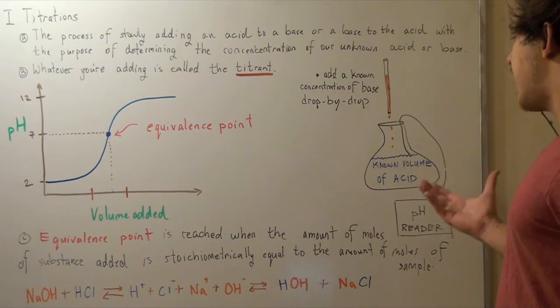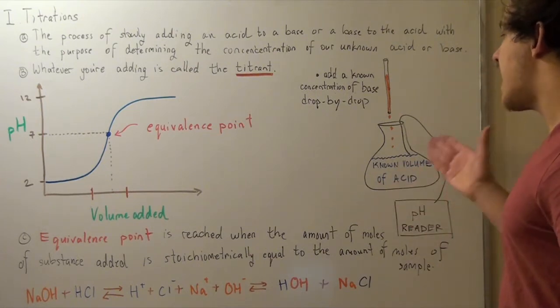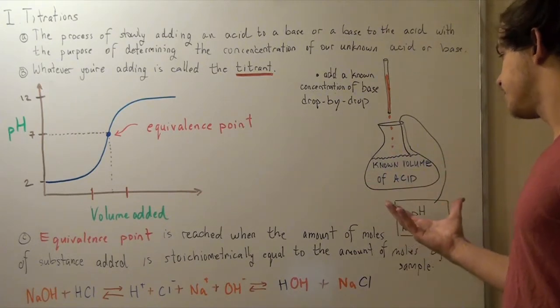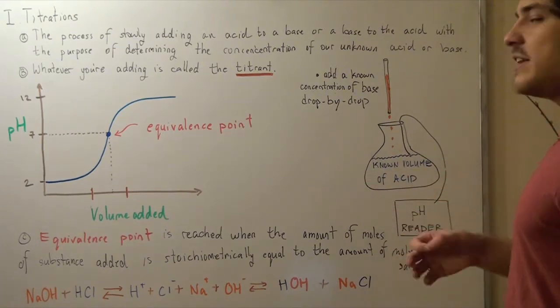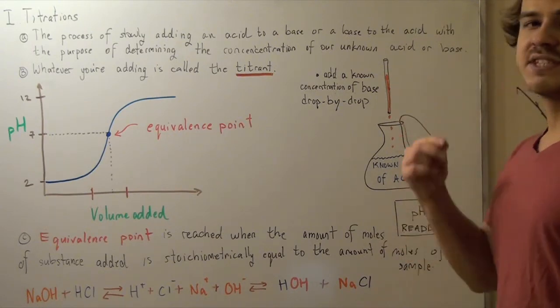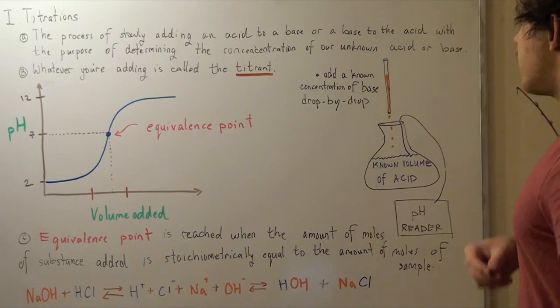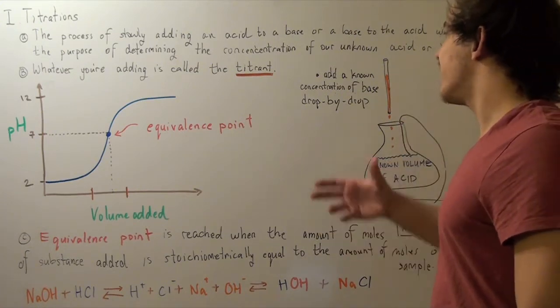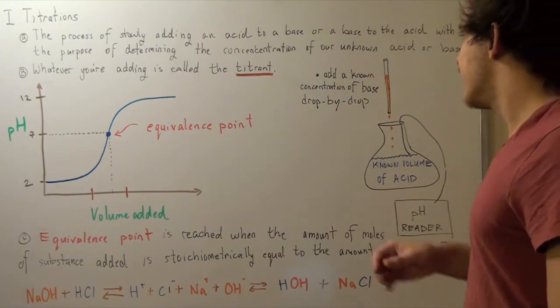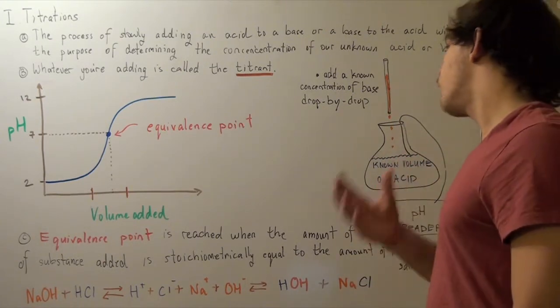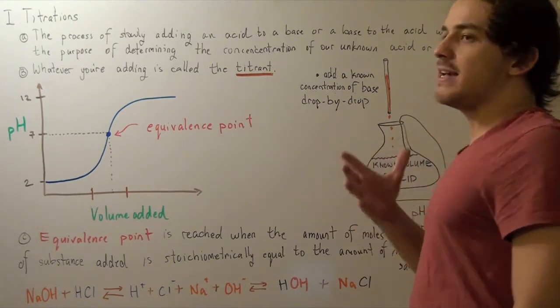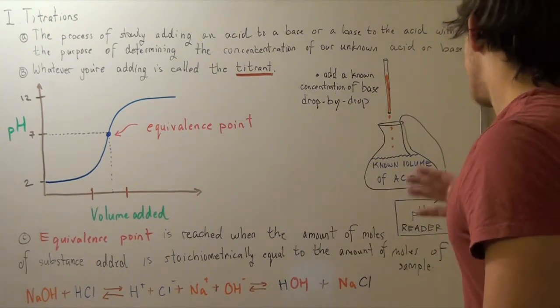Suppose we have some known volume of acid, say hydrochloric acid, in our flask, and we have a pH reader attached to the inside of our flask, so at any given time we could measure our pH. Now suppose we have some known concentration of base, and we begin adding this base drop by drop. Before we add the base, our pH is, say, 2.